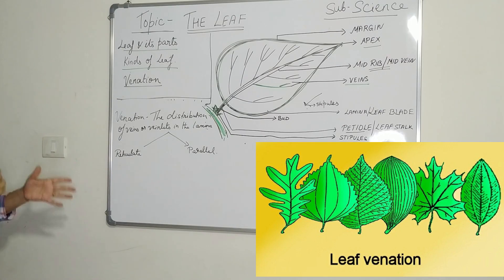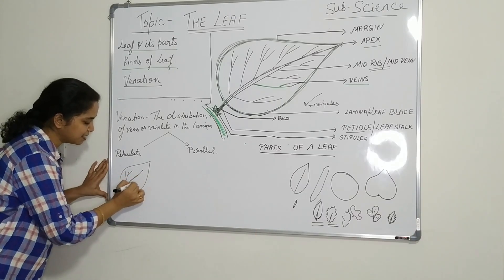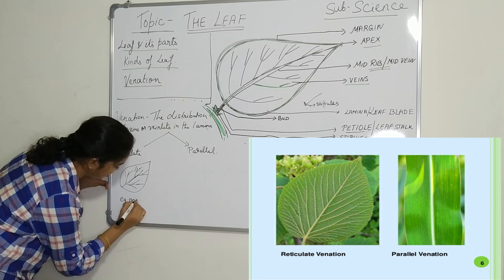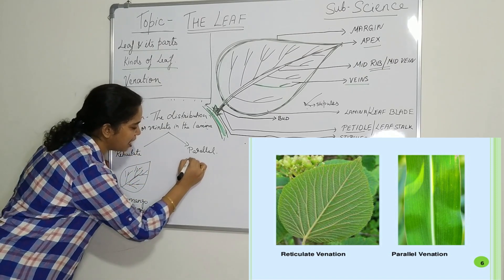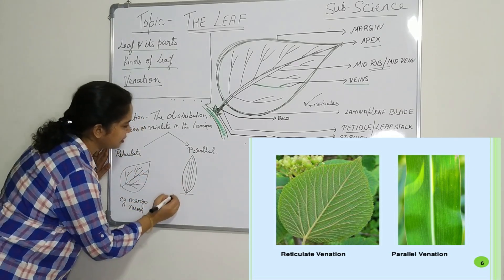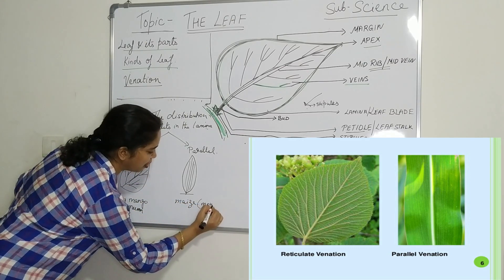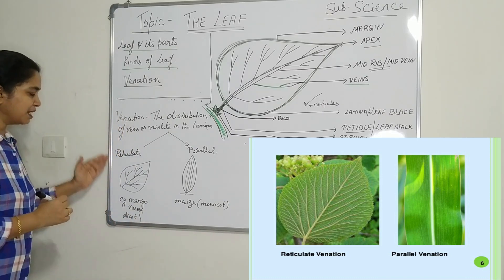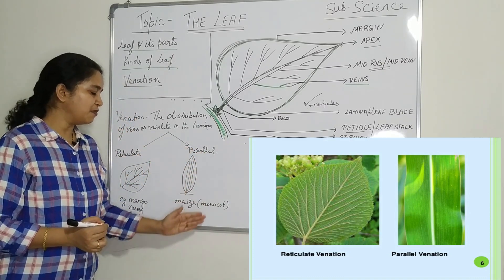In reticulate venation, the veins are distributed like a network, as you can see in a mango leaf. Examples include mango and neem — these are dicot plants. In parallel venation, the veins are arranged parallel to one another, as found in the maize plant. This type of venation is generally found in monocot plants.